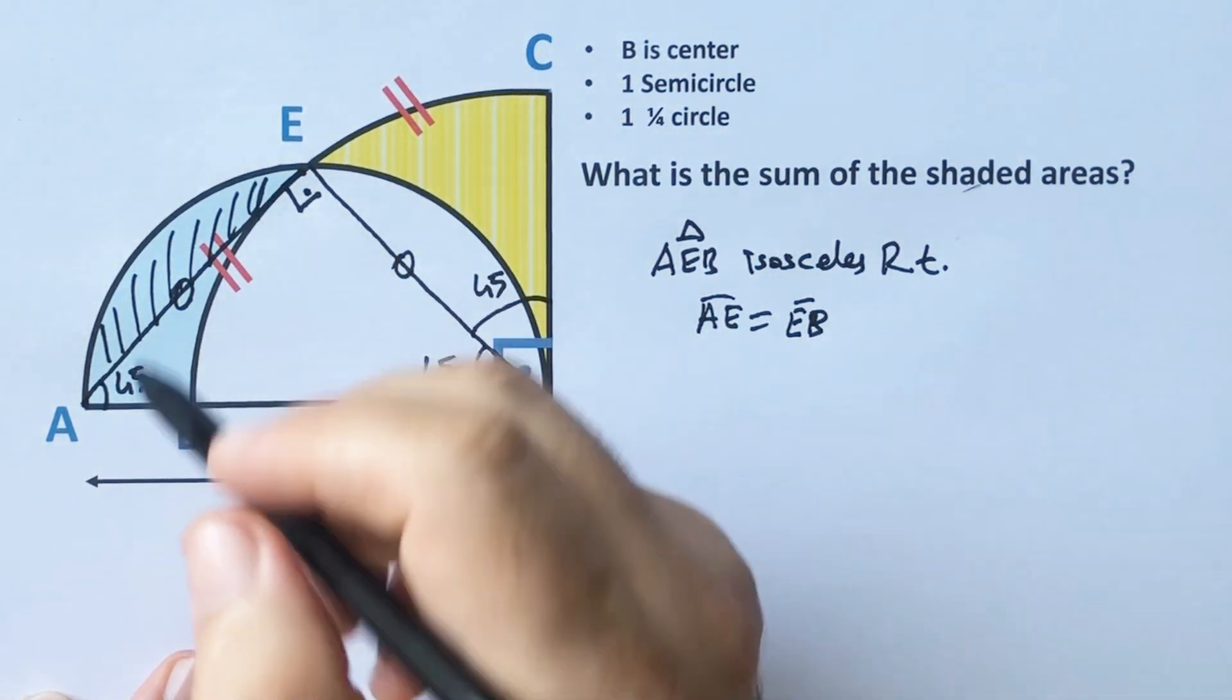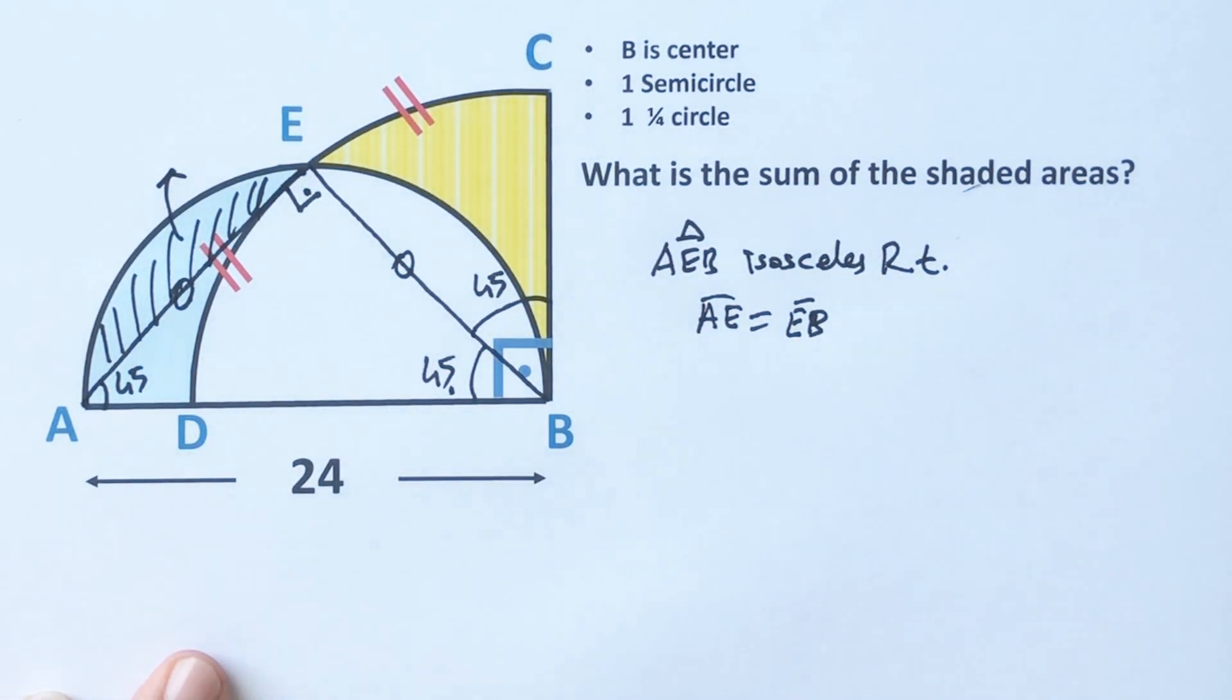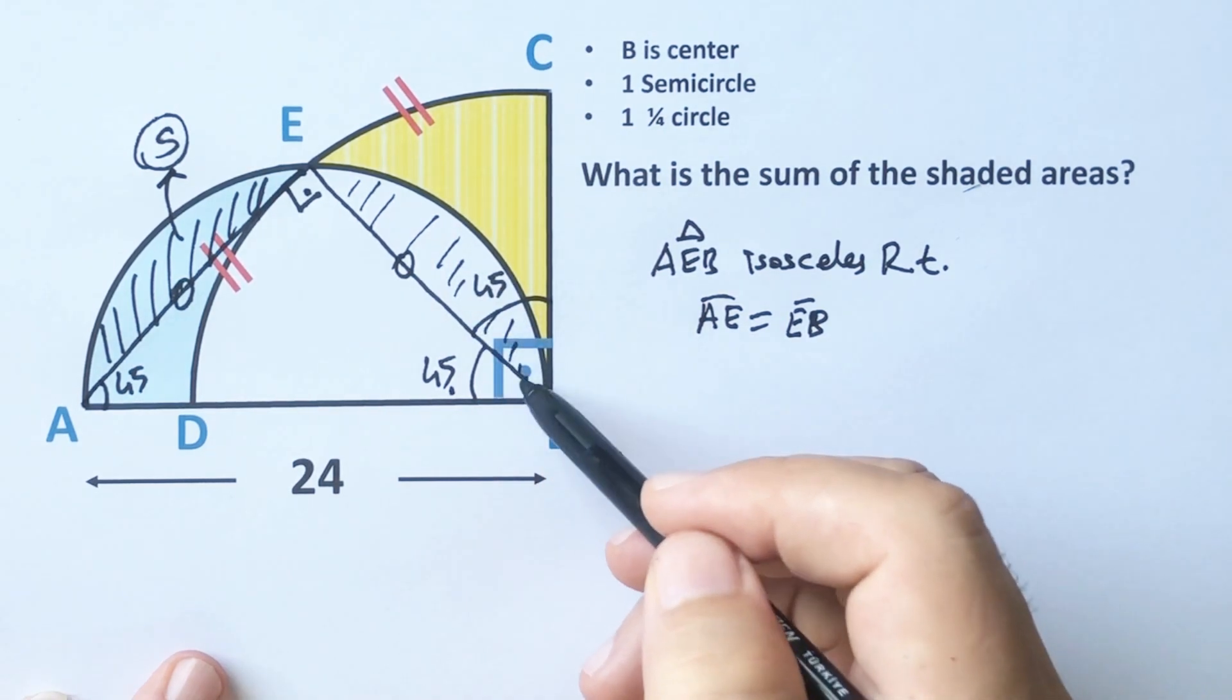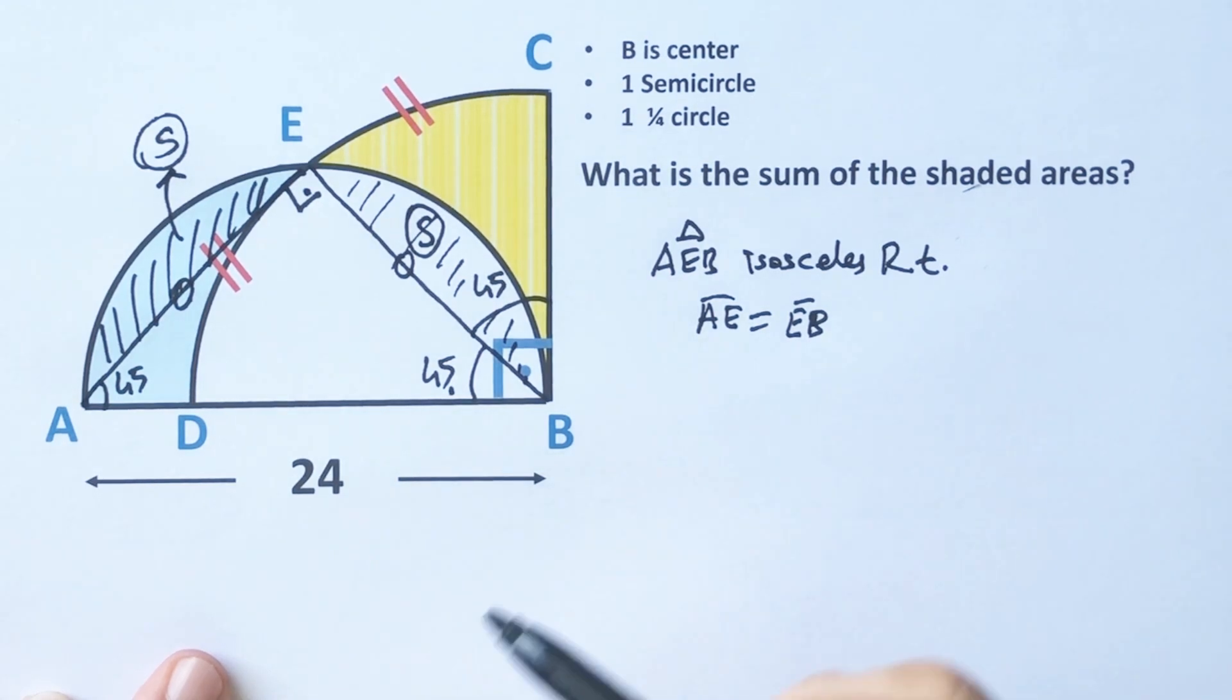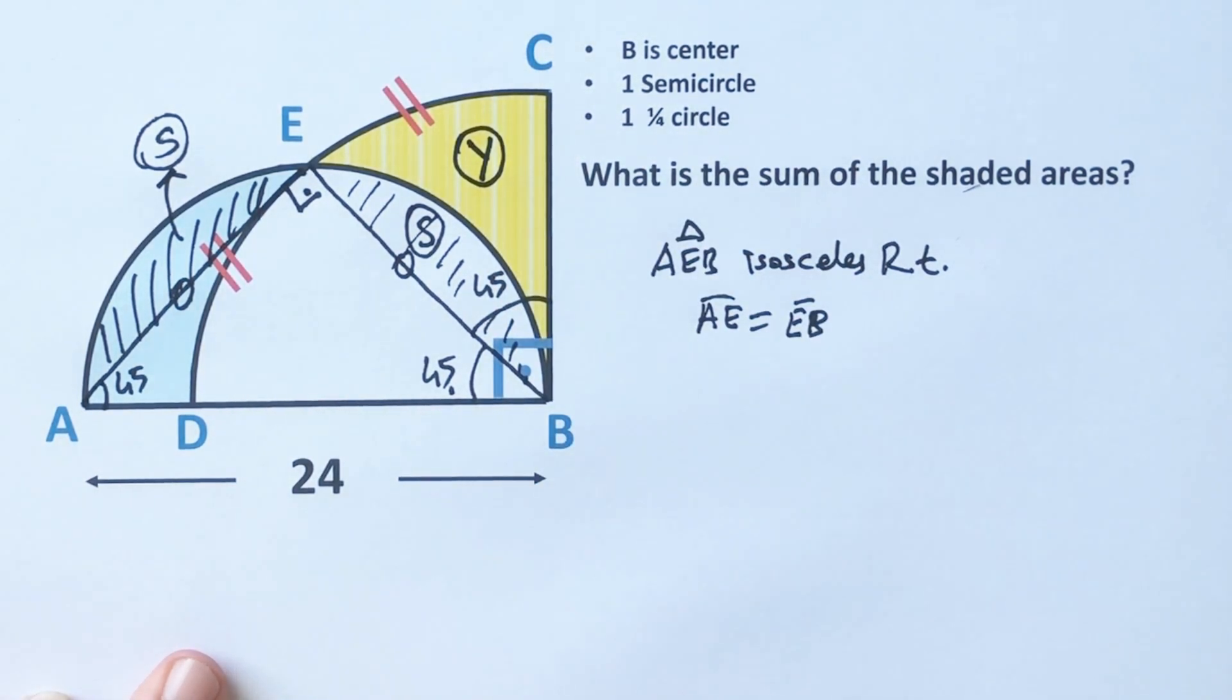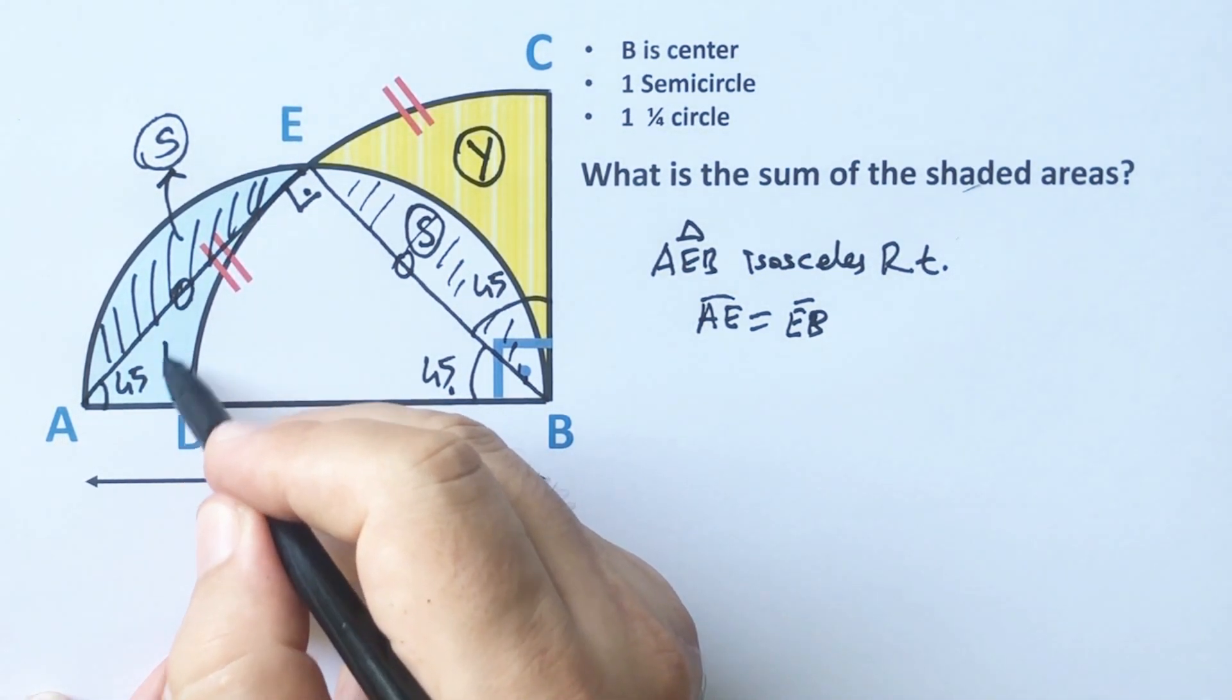Here this area I am going to call uppercase S. If here is S, this area must be equal S, right? Because they have the same chord. This yellow shaded area, let's call here Y, and this area I'm going to call here uppercase K.